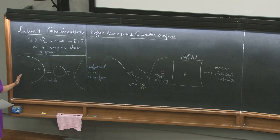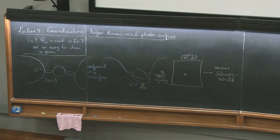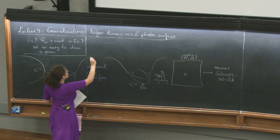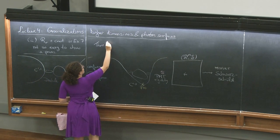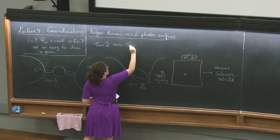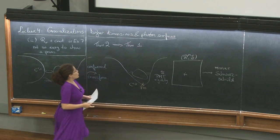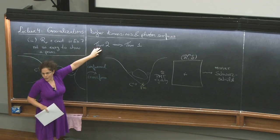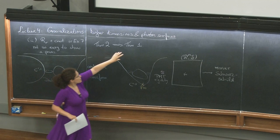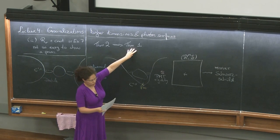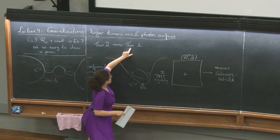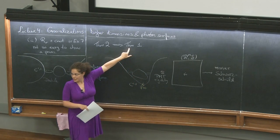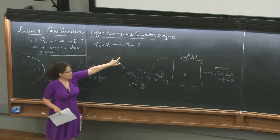One last thing: the Bunting-Masood-ul-Alam proof is, strictly speaking, stronger than the Israel proof. So the Bunting-Masood-ul-Alam theorem implies the Israel theorem — Theorem 2 implies Theorem 1. If we know that we potentially start with multiple black holes and show there is only one and it's Schwarzschild, that implies we start with one black hole and show it's Schwarzschild. And the technical condition that the gradient of the lapse doesn't vanish doesn't occur here, so it's stronger from that perspective as well.